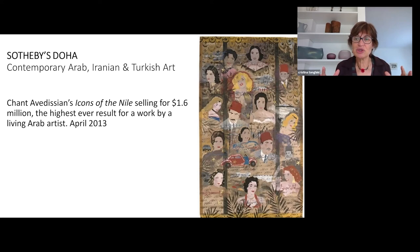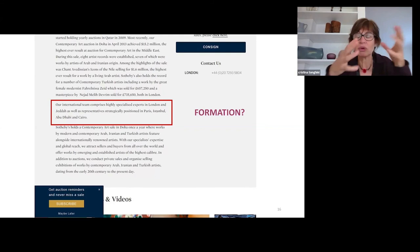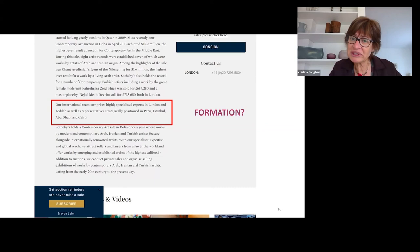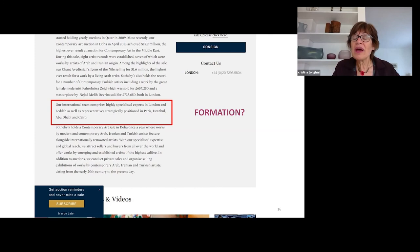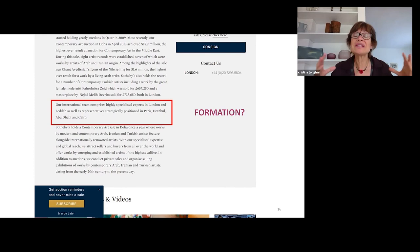The art market has adapted itself to the new situation and contributed to the development of this art. Now, let me draw your attention to this. This is something you can find on Sotheby's description of the Doha branch, or the description of art sales devoted to the art of the Arab world, Iran, and Turkey. They say that their international team comprises highly specialised experts in London and Jeddah, as well as representatives strategically positioned in Paris, Istanbul, Abu Dhabi, and Cairo. Now, where are these experts being formed? It's quite clear by now that to really become an expert capable of dealing with works of art from this part of the world, you need a certain specialisation. Your expertise in the global art or in Western modern and contemporary art is probably not enough.